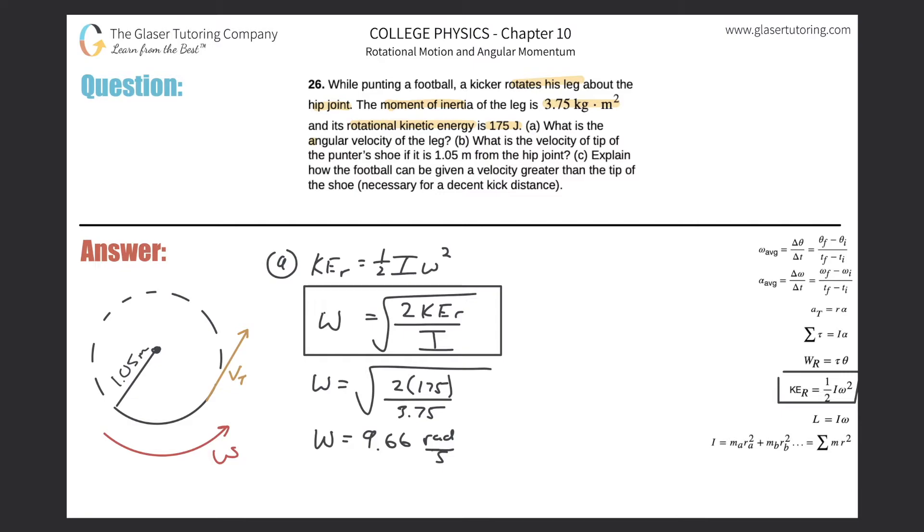This is in terms of radians per second. This value is 9.66 radians per second. That takes care of letter A.